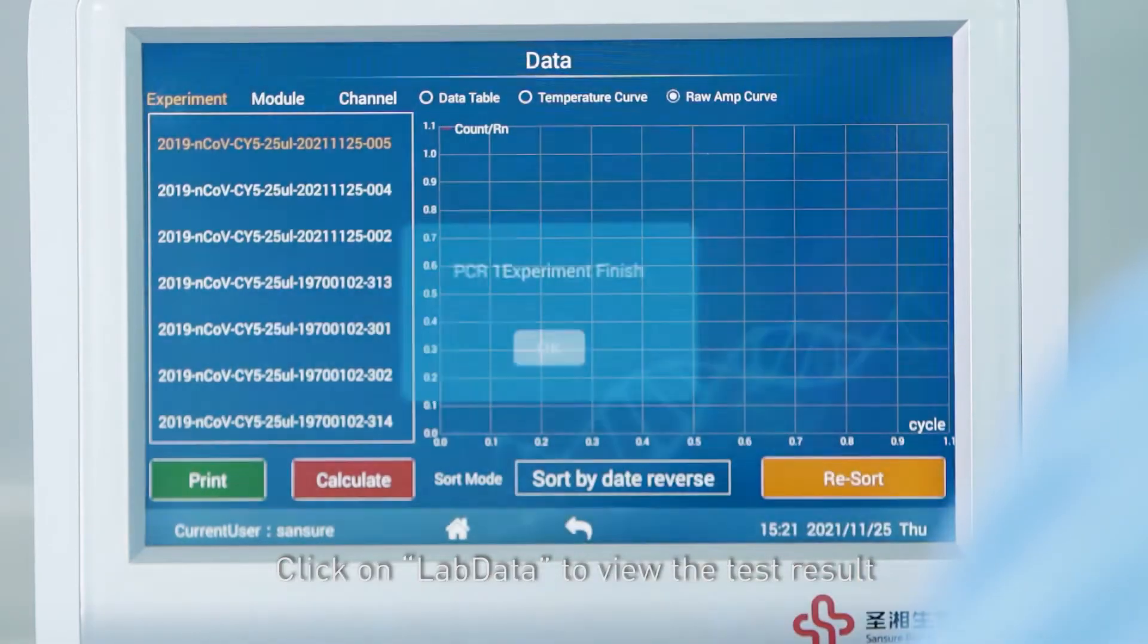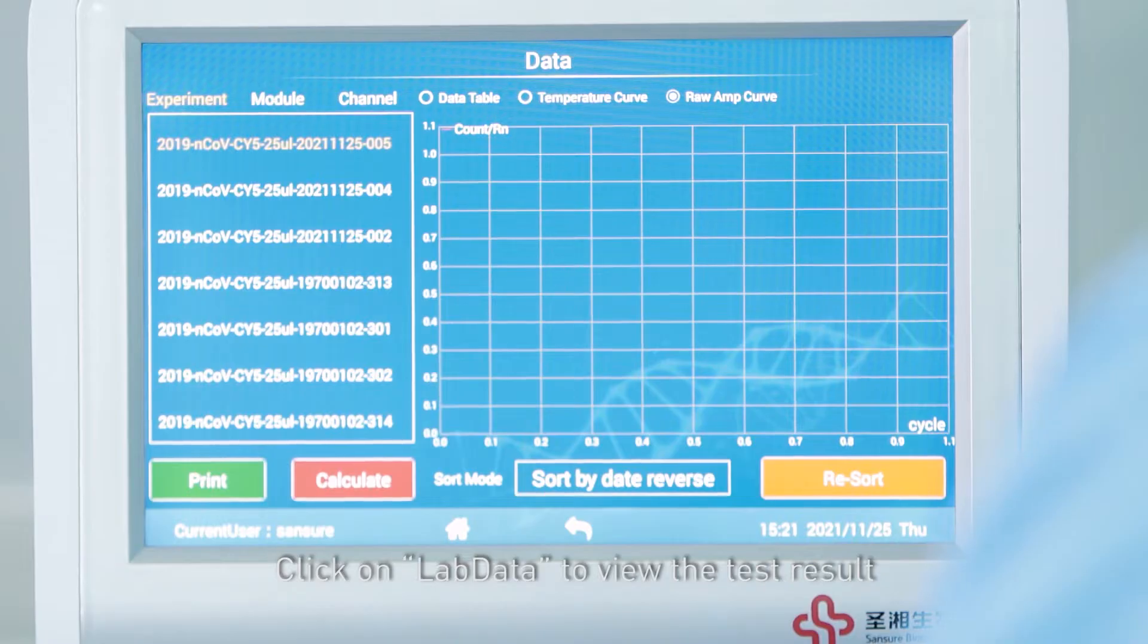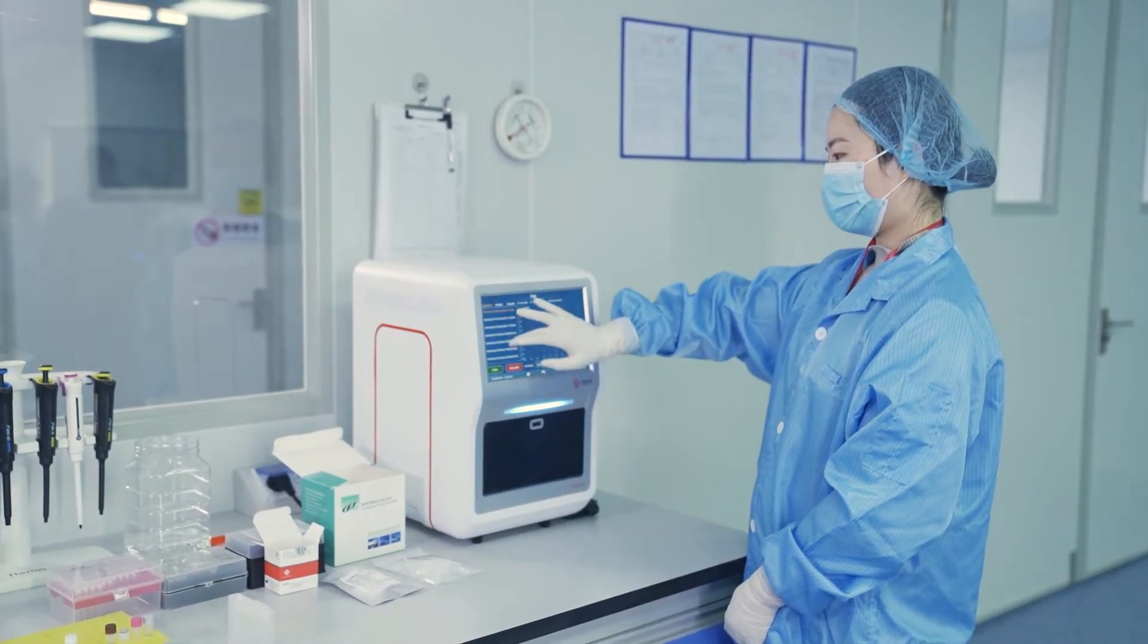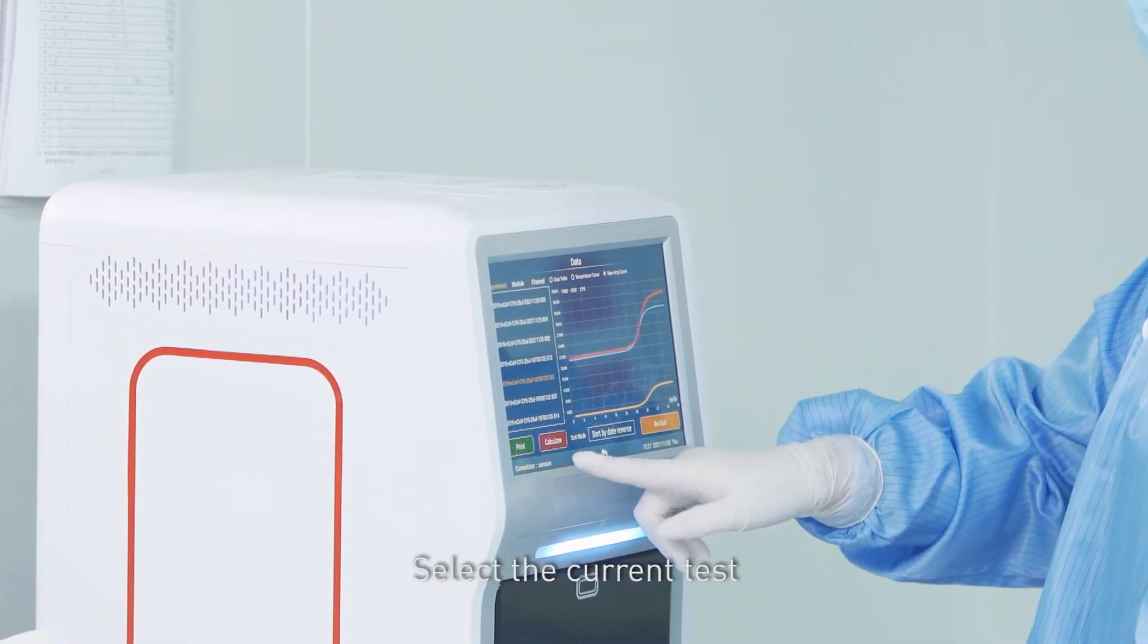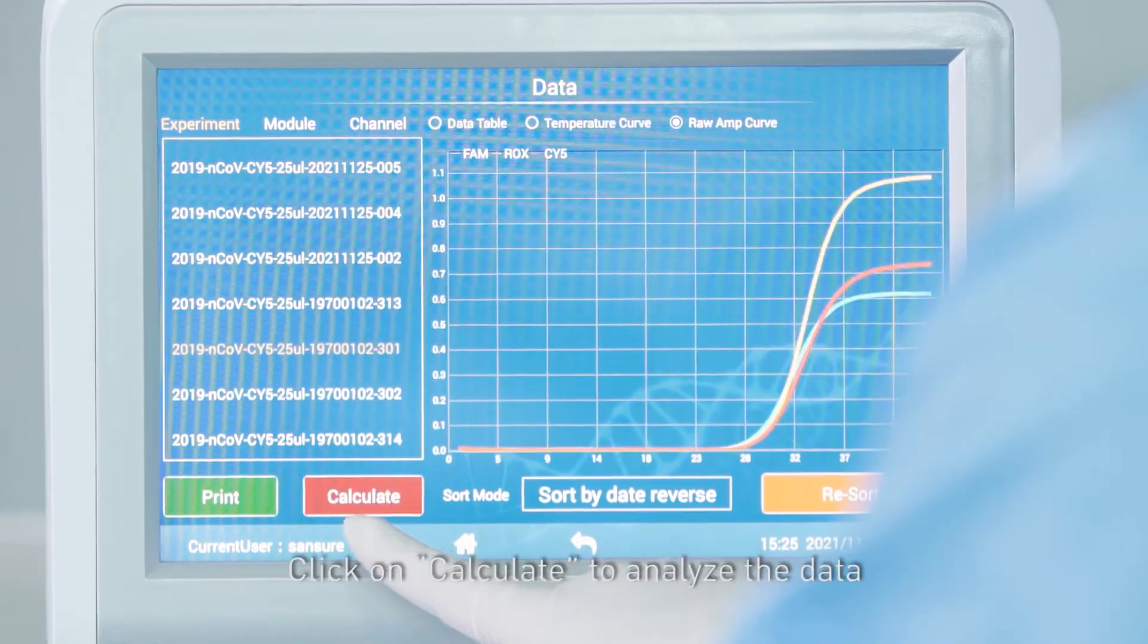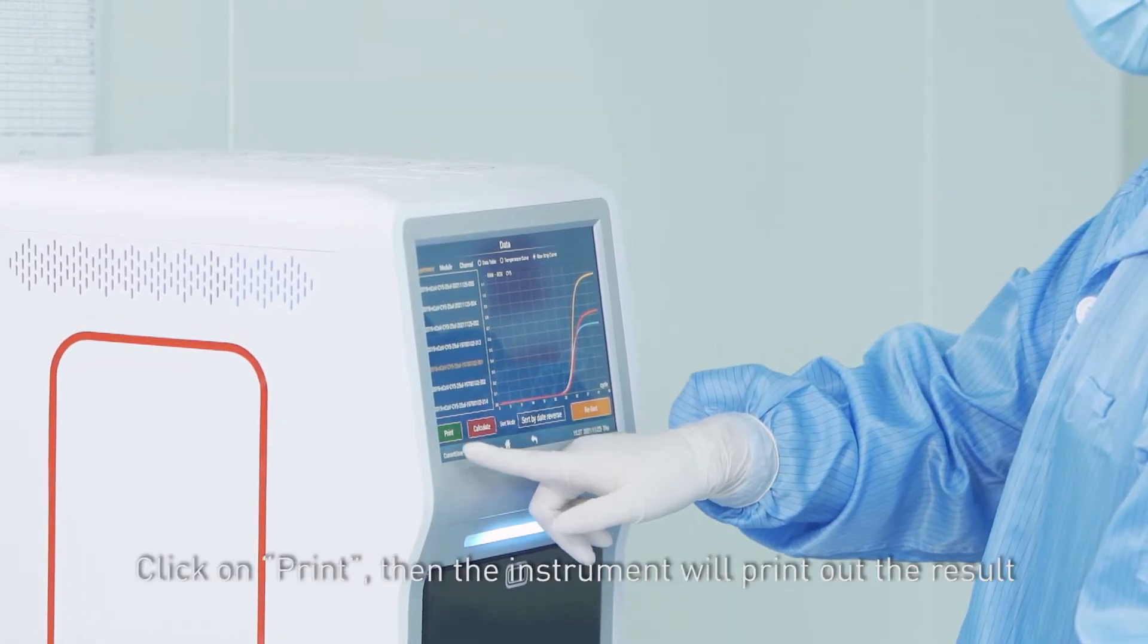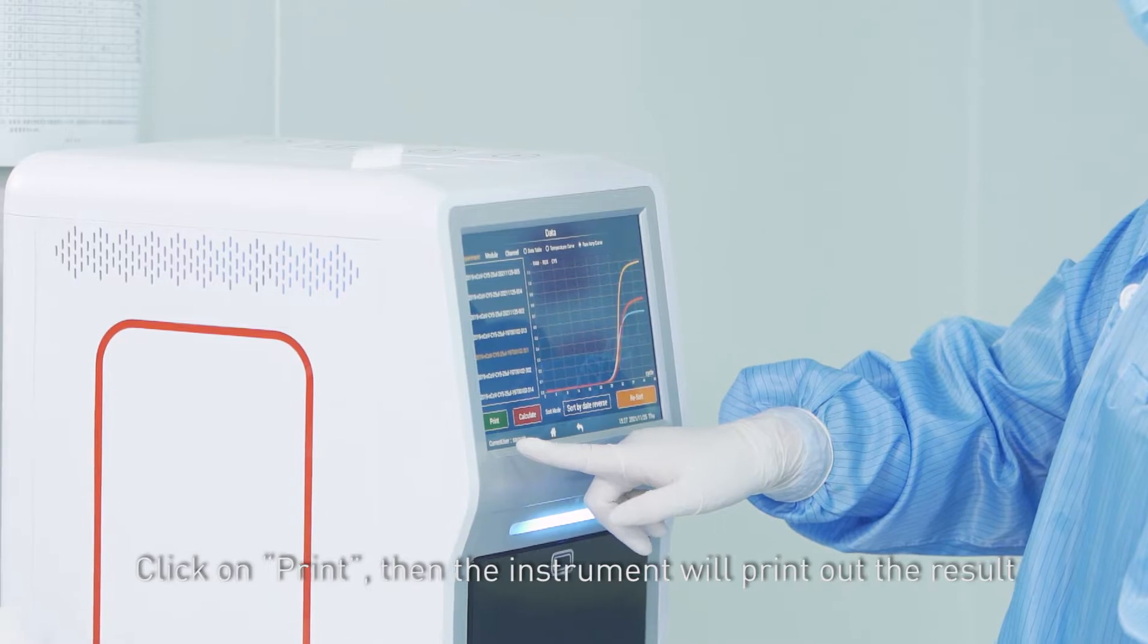Click on lab data to view the test result. Select the current test, click on calculate to analyze the data, then click on print. The instrument will print out the result.